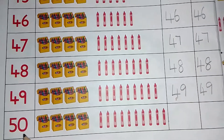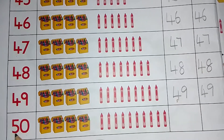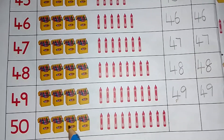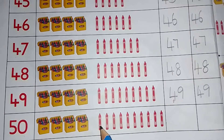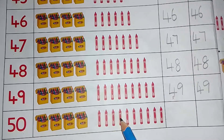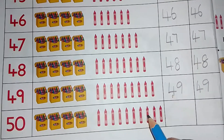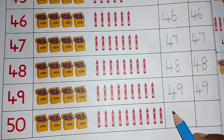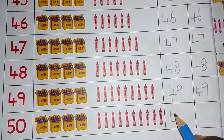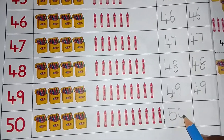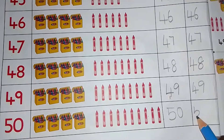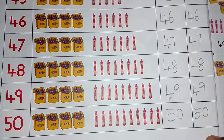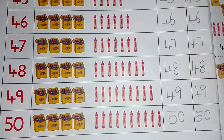Final number 50. This is 50. 5, 0. 10, 20, 30, 40, 41, 42, 43, 44, 45, 46, 47, 48, 49, 50. We write number 50. How to write 50? Write 5, then 0. 5, then 0. This is 50. Do you follow? Thank you, students.